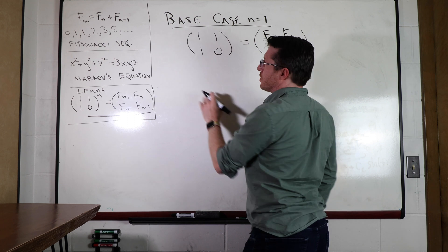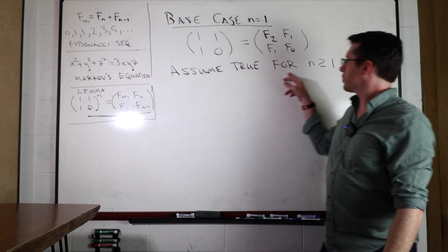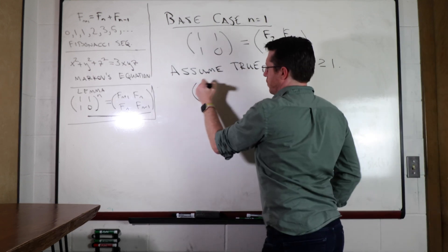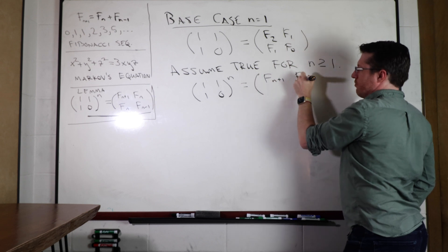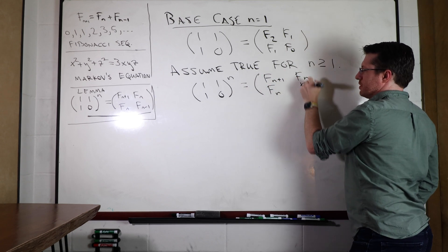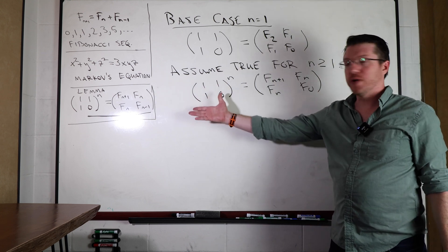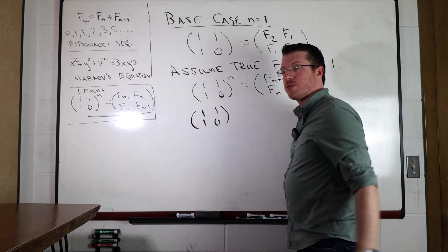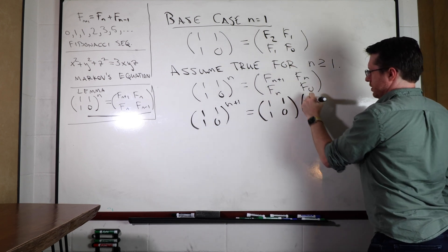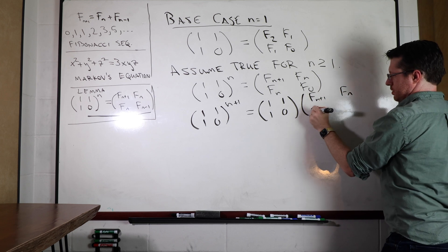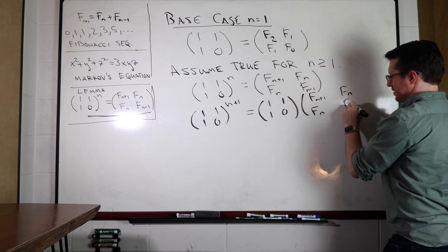Now let's assume the lemma is true for n greater than or equal to 1. That means the matrix [1,1;1,0] to the nth power equals [F(n+1), F(n), F(n), F(n-1)]. I'm going to multiply both sides by [1,1;1,0] to get the matrix to the (n+1)st power.